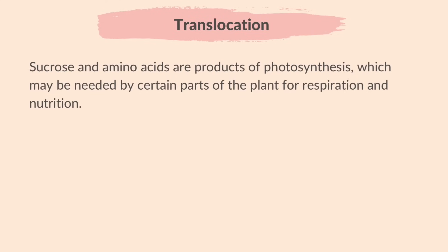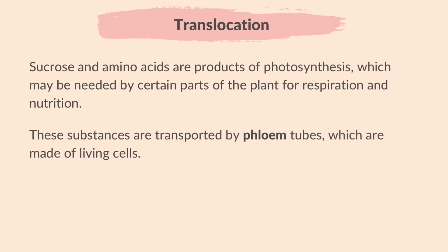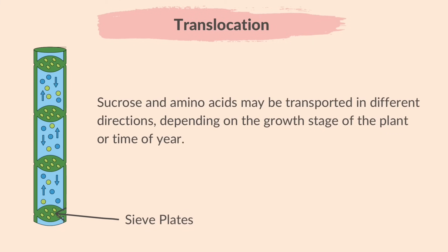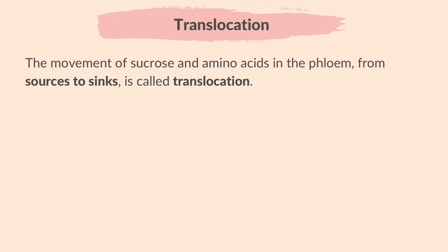Finally, let's learn about translocation. All this while, we discussed how water is transported around the plant through xylem vessels. Now let's see how sucrose and amino acids are transported through the plant. Sucrose and amino acids are products of photosynthesis, which may be needed by certain parts of the plant for respiration and nutrition. These substances are transported by phloem tubes, which are made of living cells unlike xylem vessels. Sucrose and amino acids may be transported in different directions depending on the growth stage of the plant or time of year. The movement of sucrose and amino acids in the phloem from sources to sinks is called translocation.